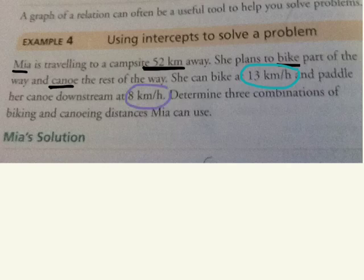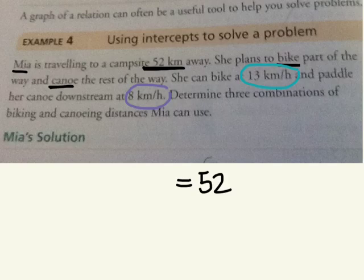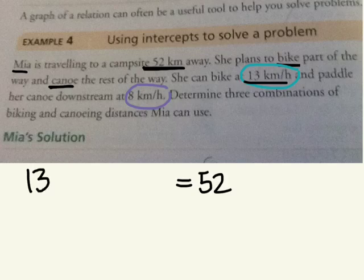We need to come up with an equation. Altogether, how far has she traveled? So we know that it's going to be equal to 52 kilometers. We don't know how many kilometers she biked, but we do know the speed. So she biked for 13 kilometers per hour. Let's make X the length of time she spent biking.